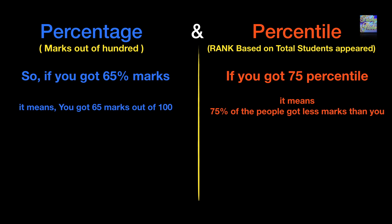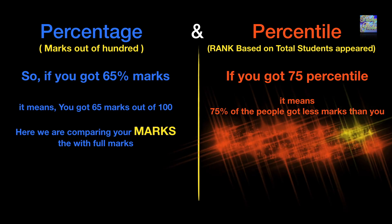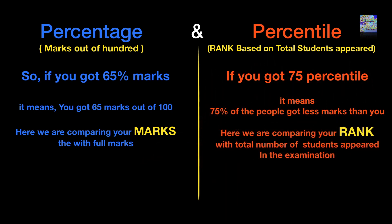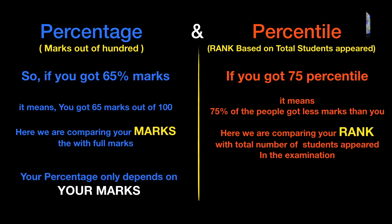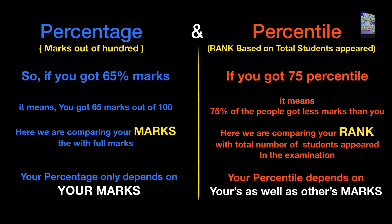Simply put, in percentage we are comparing your marks with full marks. You got 65%, so you're comparing your marks with full marks. But in percentile, we are comparing your rank with the total number of students appeared in the examination. Your percentage is only based on your marks, but your percentile depends on yours as well as others' marks.